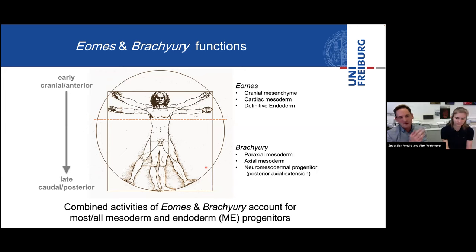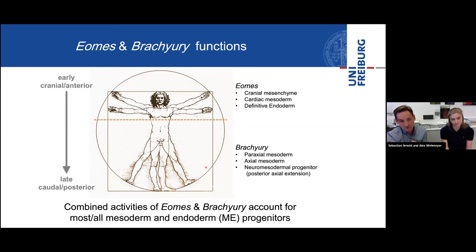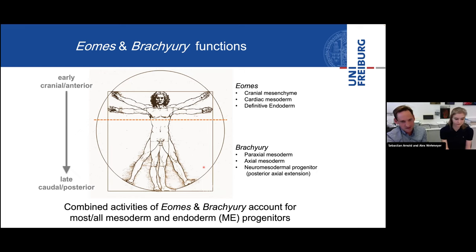In recent years we depended on mouse genetics and analyzed the functions of these factors in loss-of-function targeted genetic approaches in the mouse embryo. But this is very limited because you cannot really address molecular mechanisms, and especially when it comes to disentangling transcription factor functions versus single molecule functions, you run into problems. That's why we were happy to learn how others use embryonic stem cell-based systems. We started with embryoid bodies, but got fascinated by the self-organization of gastruloids, starting with the initial paper from Alfonso Martinez-Arias's lab in 2014.